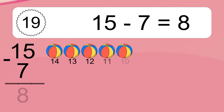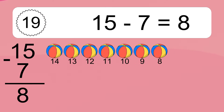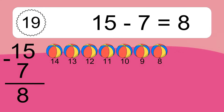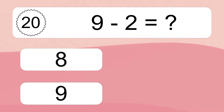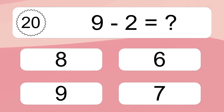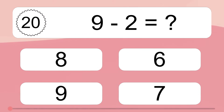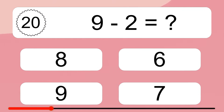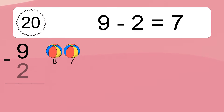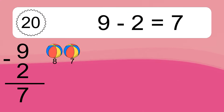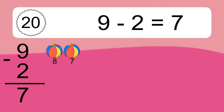15 minus 7 equals what? 15 minus 7 equals 8. Let's count it: 14, 13, 12, 11, 10, 9, 8. 9 minus 2 equals what? 9 minus 2 equals 7. Let's count it: 8, 7.